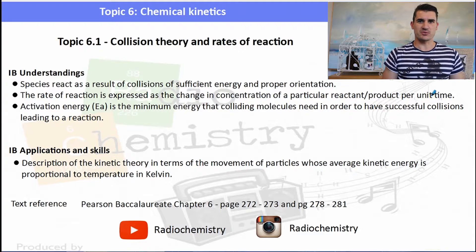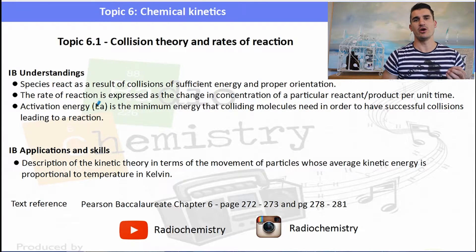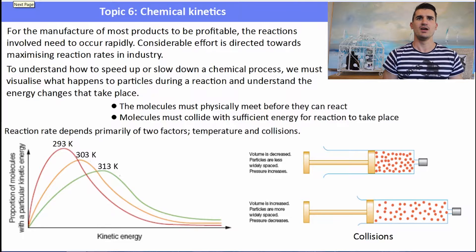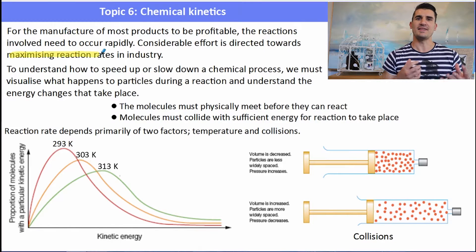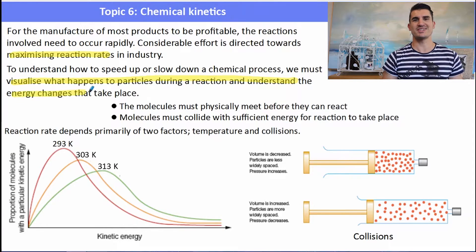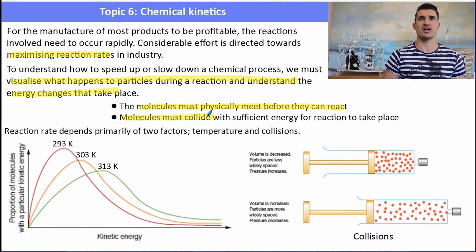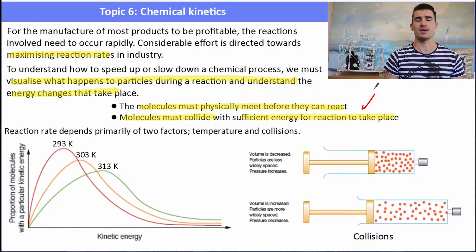In any process where chemical manufacturers are making something, we're always looking to maximize the rate of reaction — the faster we can produce something, the better. To understand how we can speed up or slow down a reaction, we need to know what kind of energy changes take place. In a reaction, the molecules must first collide — they must physically meet — and then they have to overcome the requirement of having enough energy to break the bonds in the reactants. Not all collisions are successful; a large number of collisions will occur and no reaction will take place.